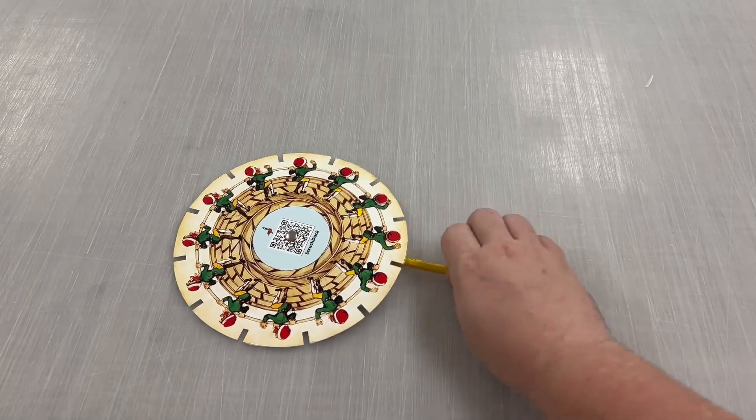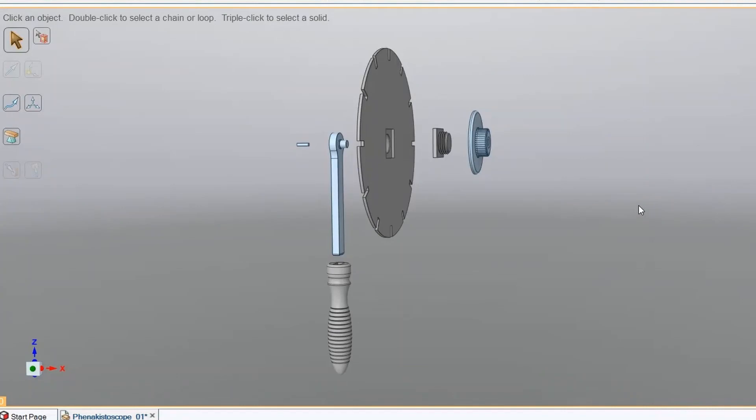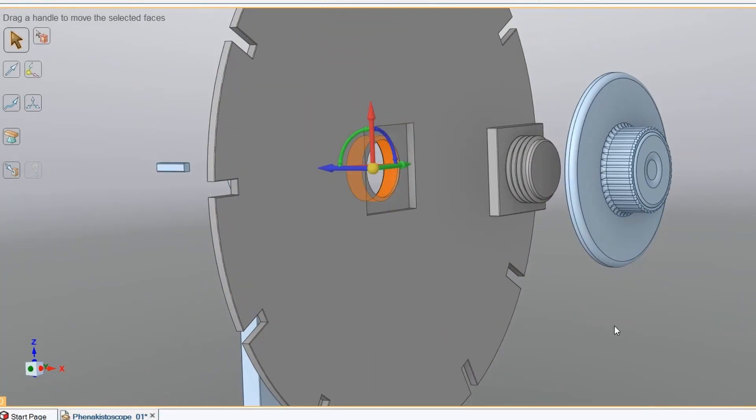Now this will get the job done, but I want to make something a little more durable. After a while on my computer, I designed this. It uses a regular 608 ball bearing in the center of the main disc.